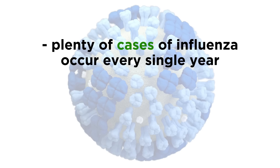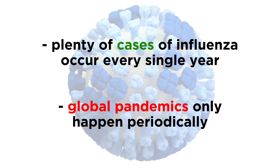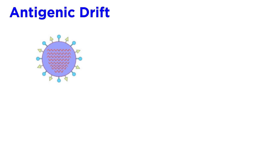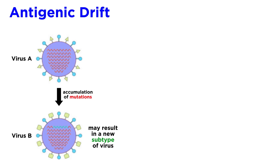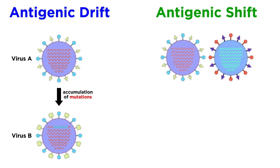Epidemics of influenza happen each year, but global pandemics only pop up periodically. The reason for this really boils down to the mutation and evolution of the virus. First, there's the concept of antigenic drift, which is important for influenza A and B viruses. Basically, point mutations in the genes that encode the hemagglutinin and neuraminidase spikes — causing a single amino acid discrepancy during normal viral replication — can grant the virus the ability to escape the immune system. In other words, one single mutation might weaken the interaction of the virus with antibodies that we've already made against it. Antigenic drift commonly occurs during the course of a standard flu season, and in some cases, enough changes accumulate in a virus that a new subtype evolves.